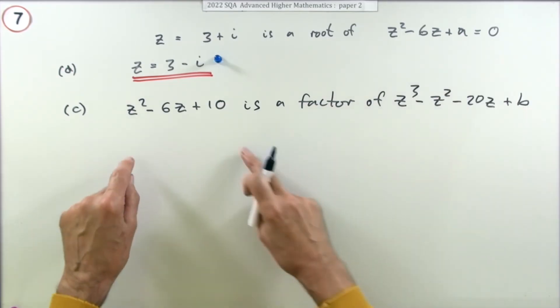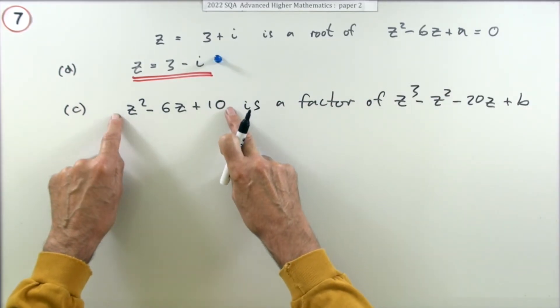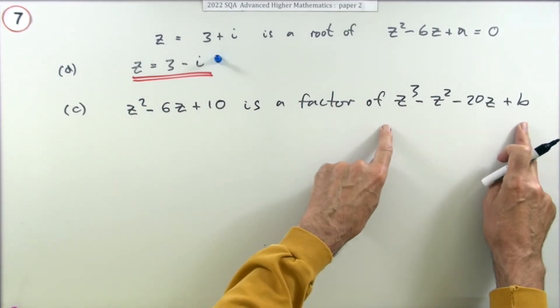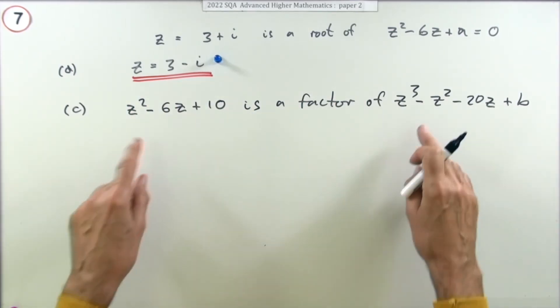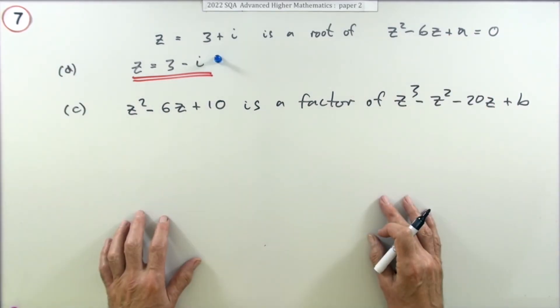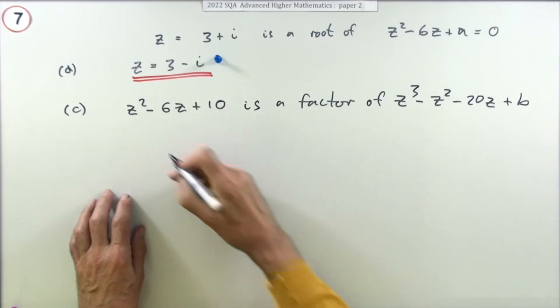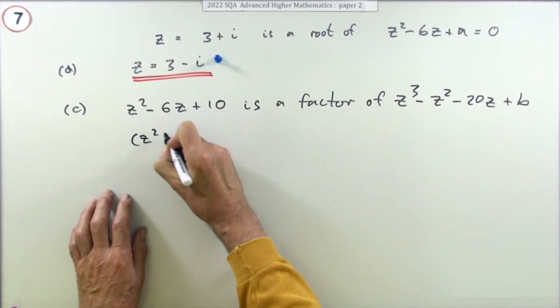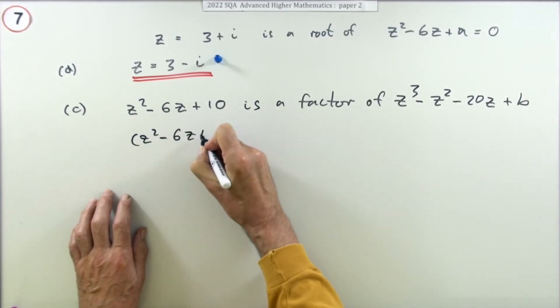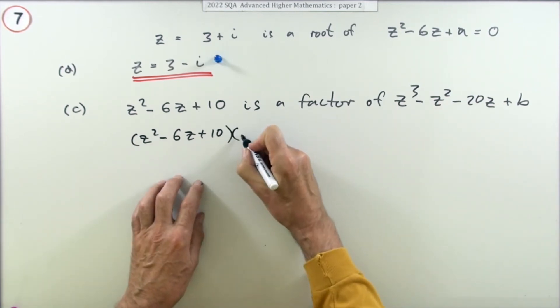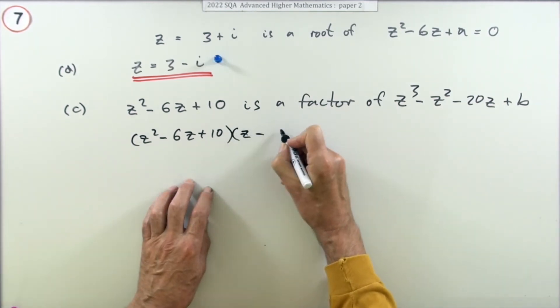But there's two ways of doing it. You could either do that division again, so you could say that if that's a factor it should divide in exactly and then just make sure your remainder is 0, or you could do it the compare corresponding coefficients way. So you could say this: if that's a factor and that's cubic, then there must be some other linear factor, so I'll just call that z minus alpha.